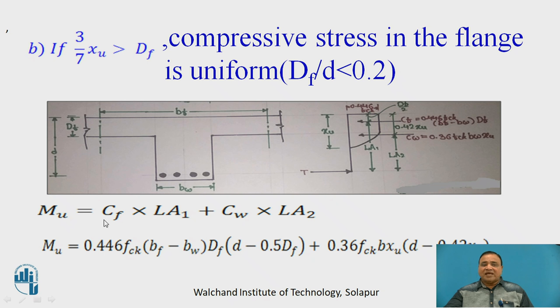Therefore, Mu is given by Cf into lever arm 1 plus Cw into lever arm 2. Force in flange it is 0.446 FCK into (Bf minus Bw) into Df, multiplied by D minus 0.5 Df that is your lever arm 1, plus 0.36 FCK Bw into Xu. It should be Bw into Xu because now we are considering only web, into D minus 0.42 Xu.